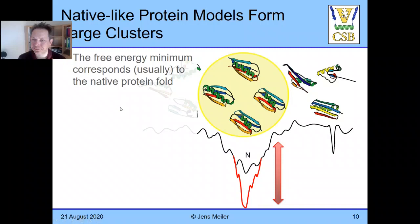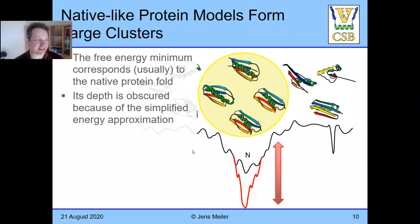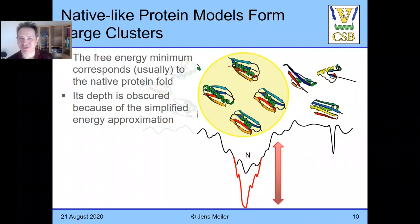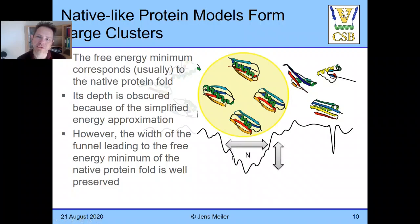Unfortunately, this energy function is also very imprecise, so it loses the ability to distinguish the correctly folded protein from alternatives — the free energy minimum is obscured. The conformational space is still very large, so a single calculation will not even find the lowest energy minimum. You therefore run the simulation thousands of times, then cluster the results. The hypothesis is that wide energy minima are less perturbed, so a very deep energy minimum is also very wide, and large clusters are more likely to represent the native fold. This works reasonably well.